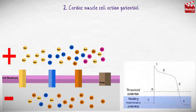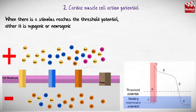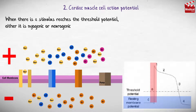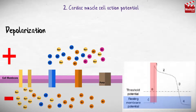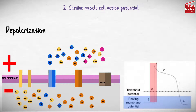Starting with phase 4, the resting membrane potential, where sodium, chloride, and calcium ions have a higher concentration outside, and potassium has a higher concentration inside the cells. Then phase 0: when a stimulus reaches the threshold potential — either myogenic or neurogenic — sodium channels open, causing influx of sodium ions and rapid depolarization of the cell membrane. This creates more positive charge inside the cells compared to the outside.